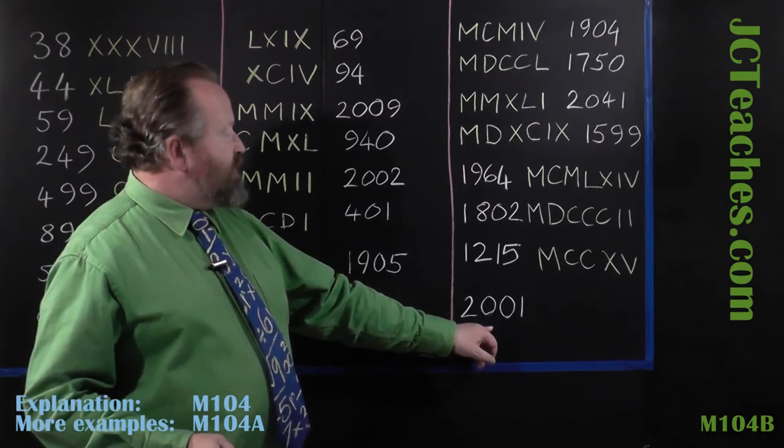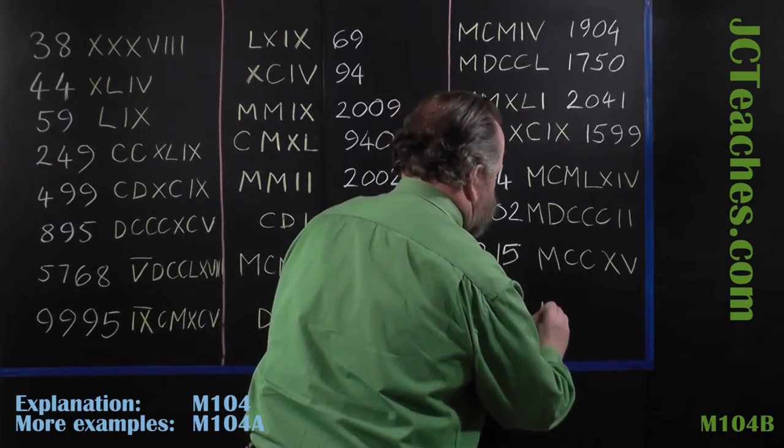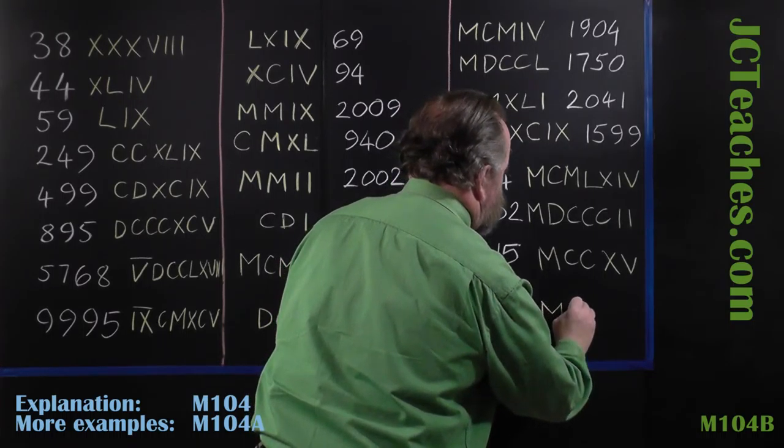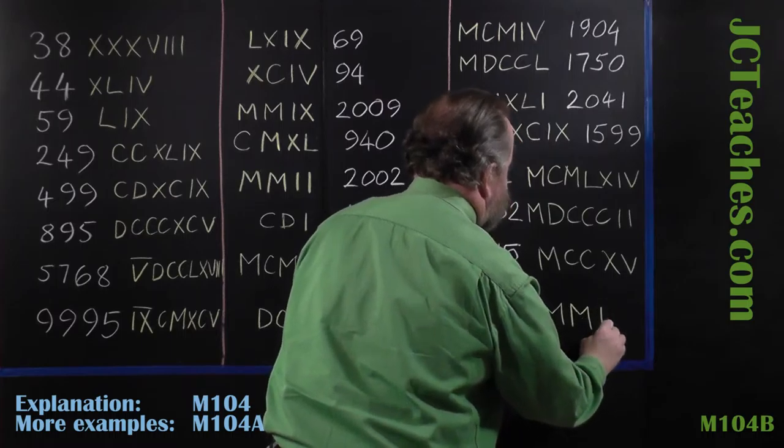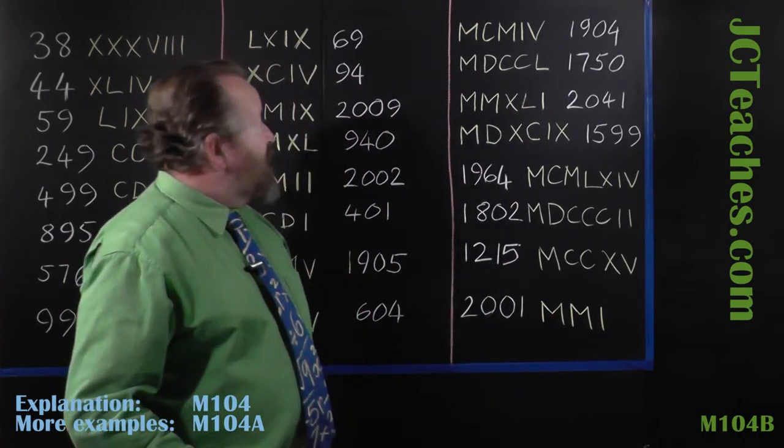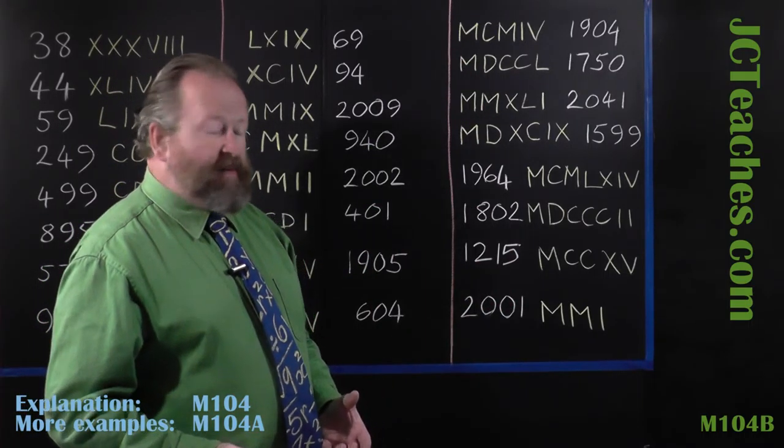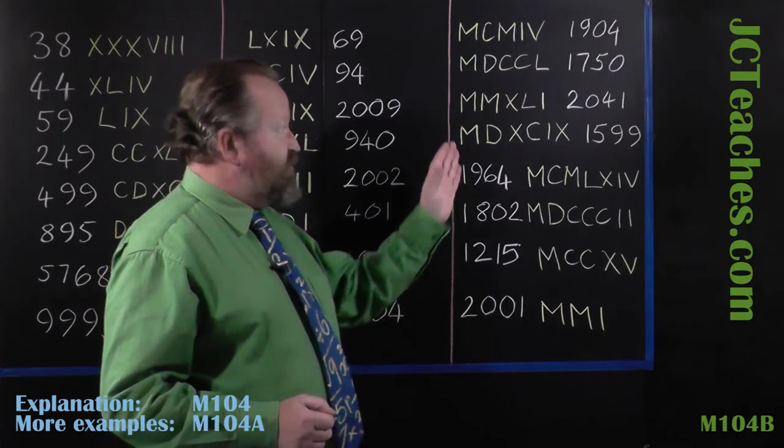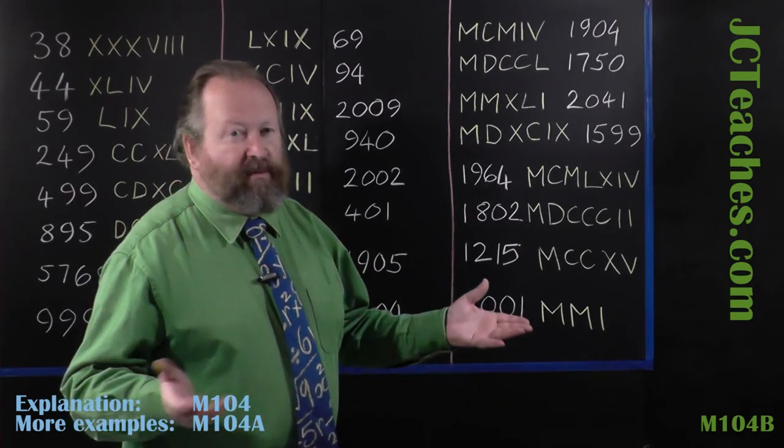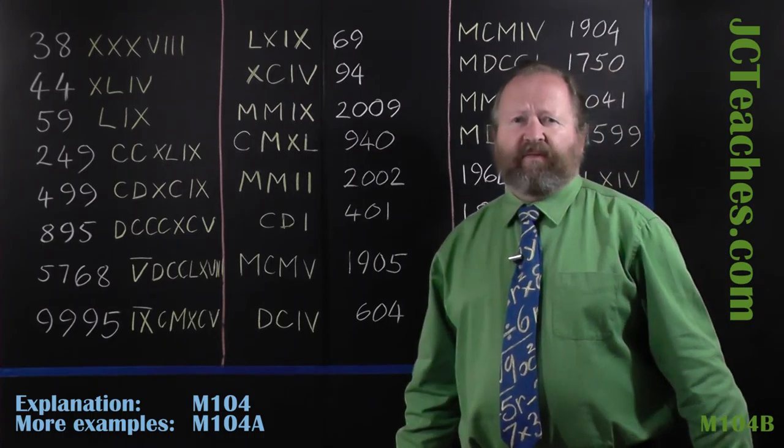And finally, 2,001 would simply be 1,000, 2,000, and 1. So there are a few years, and years really are the things that you're most likely to see apart from clock faces on Roman numerals, and clock faces are fairly obvious.